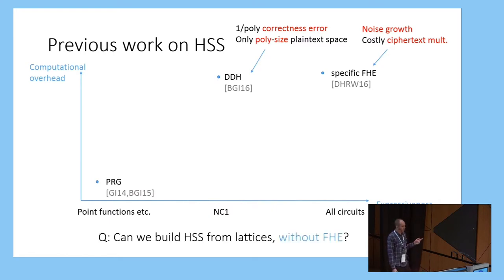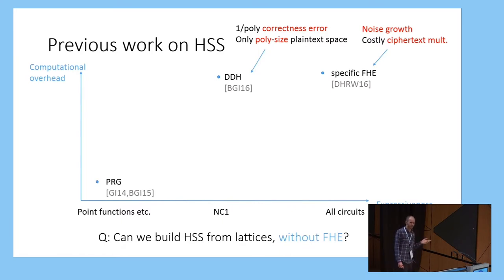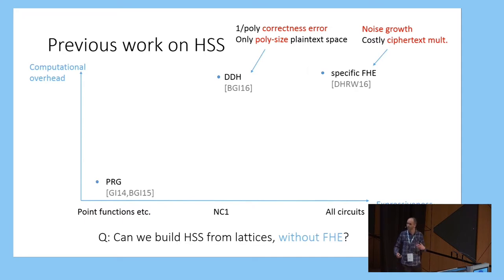So in this work, the main question we're interested in is: can we build some kind of efficient homomorphic secret sharing from lattice-based assumptions without relying on fully homomorphic encryption? This is not a feasibility kind of question — of course, we know if we allow lattice-based cryptography we can build FHE. It's much more about the concrete efficiency: we're looking for something that avoids, or has much more efficient homomorphic evaluation than, using FHE.